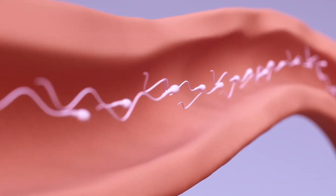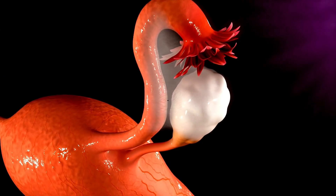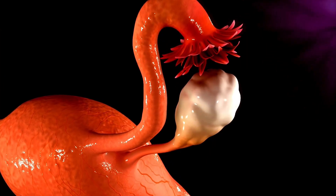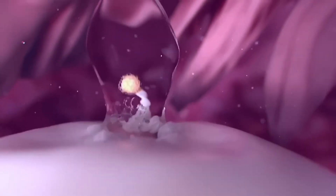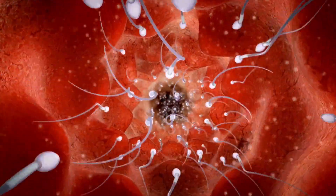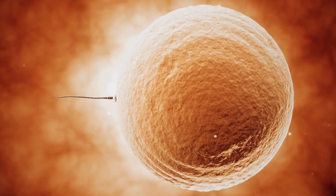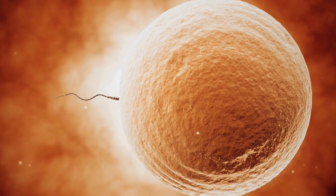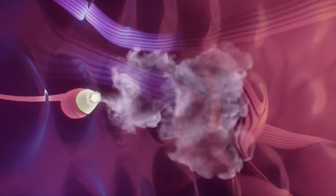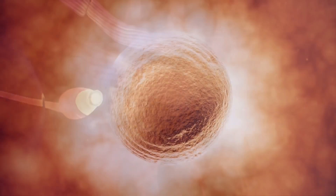For conception to happen, the female must be ovulating, meaning an egg is released from one of her ovaries. Fertilization happens when a sperm penetrates the egg. The sperm's head releases enzymes that help it break through the egg's outer layer.